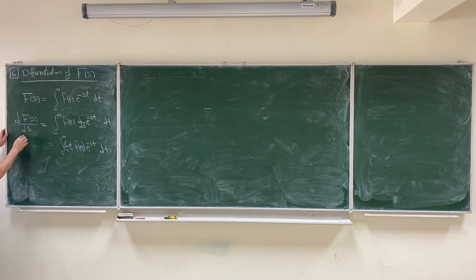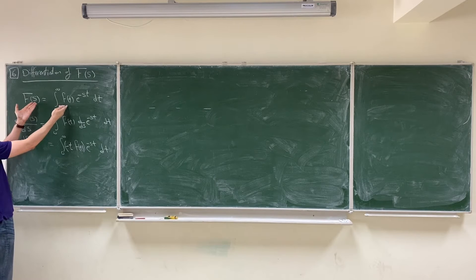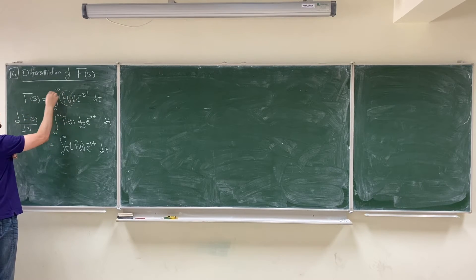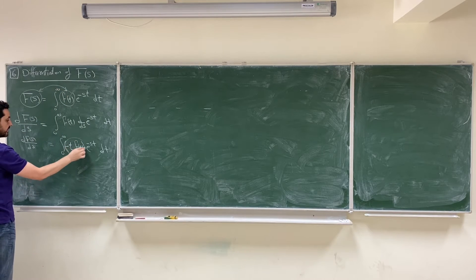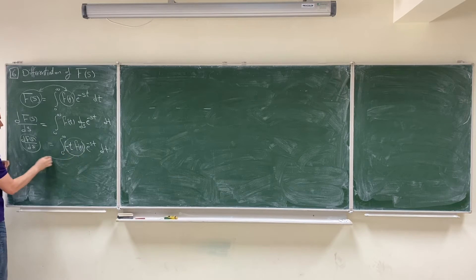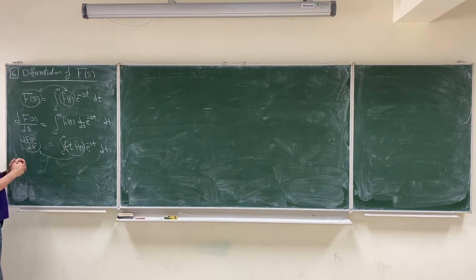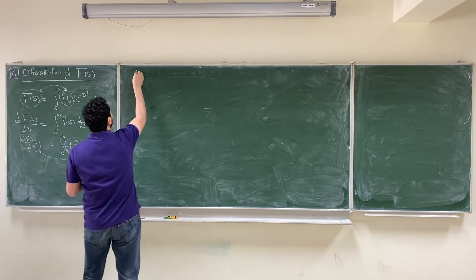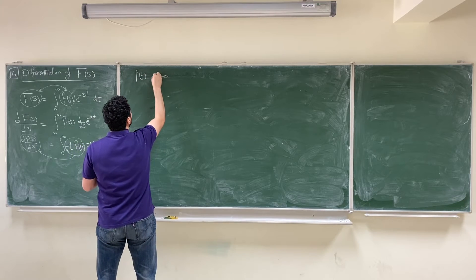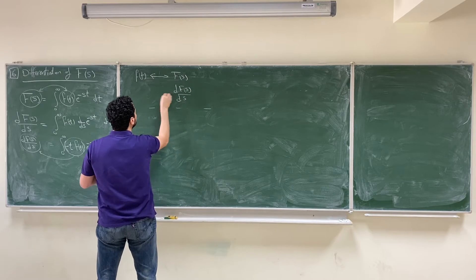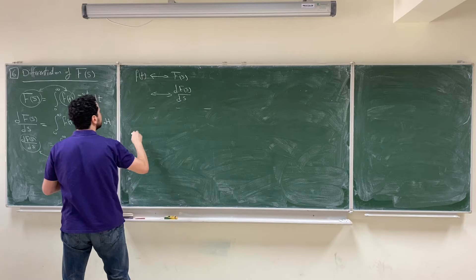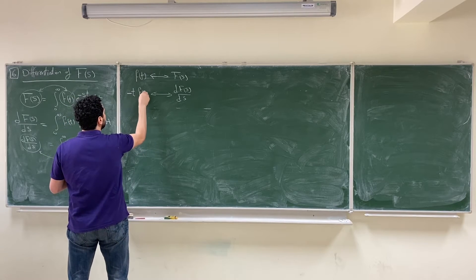This is the differentiation of F(s). Looking carefully at this equation, it is very similar to the Laplace transform equation, but instead of the pair f(t) and F(s), we now have the pair -t·f(t) and dF(s)/ds. This means that if f(t) has Laplace transform F(s), then dF(s)/ds has inverse Laplace transform -t·f(t).